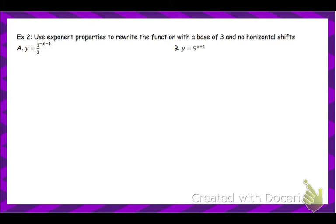This uses a lot of the stuff we did on the first day with our exponent properties. I'm going to start with the one with one third. So one third is the same thing as three to the negative one. All I've done is rewritten one third as three to the negative one — that's the exact same thing. Now using exponent rules — power to a power — you can multiply those exponents.